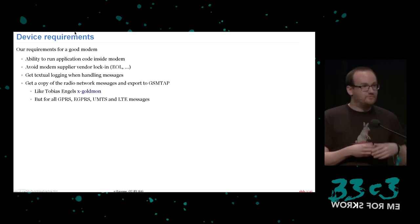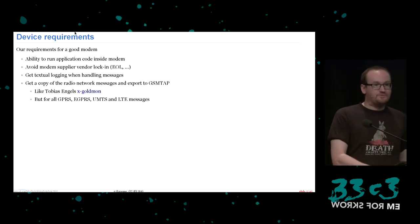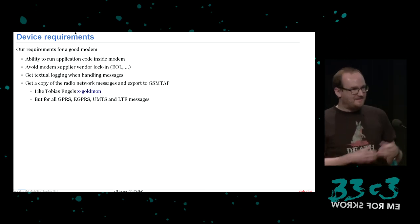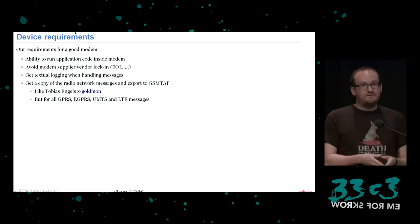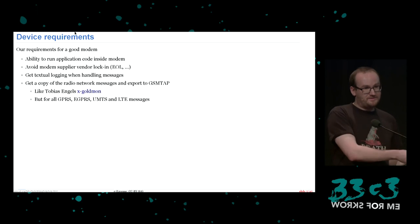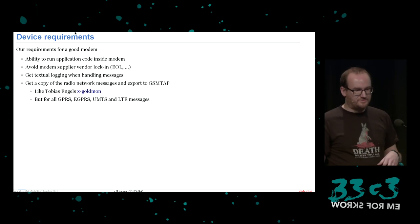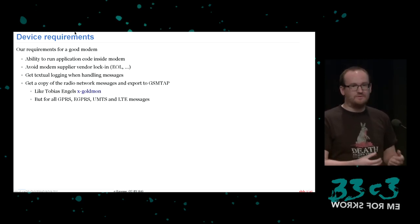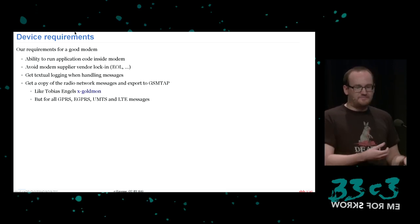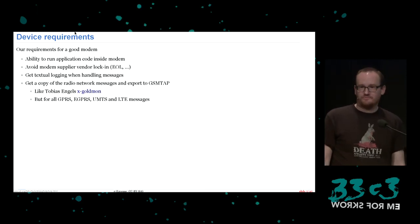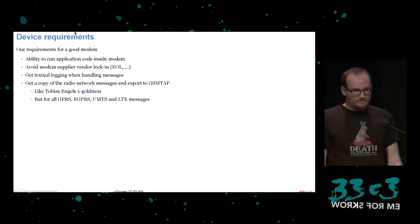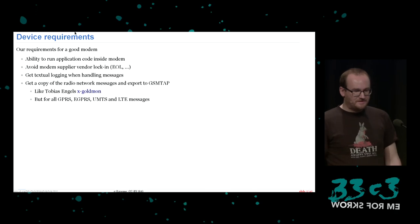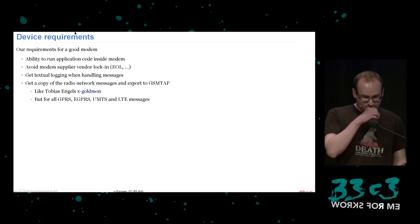This brings us to our modern requirements. A good modem should let us run real C applications with access to the device, no artificial control, no vendor lock-in. For debugging we want log messages and control. For 3G/4G development we want to see radio messages. You might know xgoldmon by Tobias Engel, which gets tracing from Infineon basebands, but it has limitations — we want something like xgoldmon for GPRS, EDGE, UMTS, and LTE.